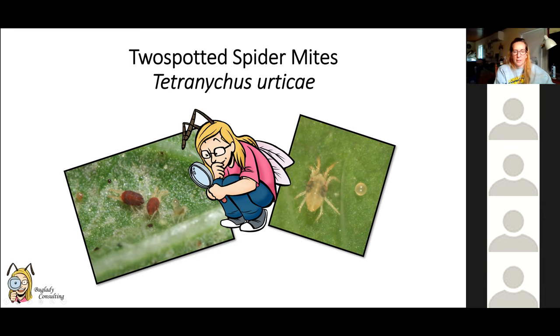One interesting note: if you're growing anything in the milkweed family — and milkweeds are very popular today for monarch gardening — two-spotted spider mites on those plants love to be red. All the red mites I've sent in from milkweed have come back as two-spotted spider mites. So if it's on milkweed, there's a really good chance it is just two-spot.